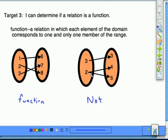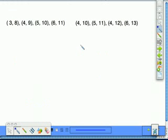So you're looking to see whether the domain corresponds with more than one element of the range. Another way we could see these would be in ordered pairs. I'm looking for the same thing. In this case, I'm looking for an element of the domain that would be repeated and corresponding with more than one element of the range.